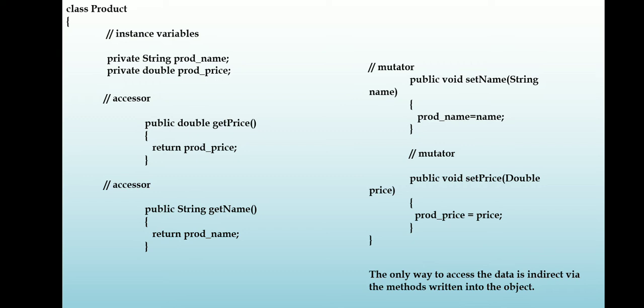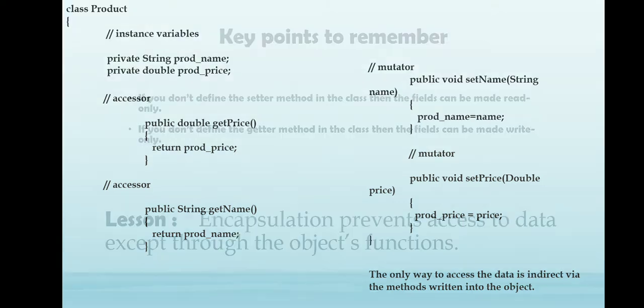This is an example program. So for the same which I have explained already, I declared all the variables as private. And for accessing this private, I am using the accessor and mutator. Now see here, the only way to access the data is indirect, where the methods return to the object.